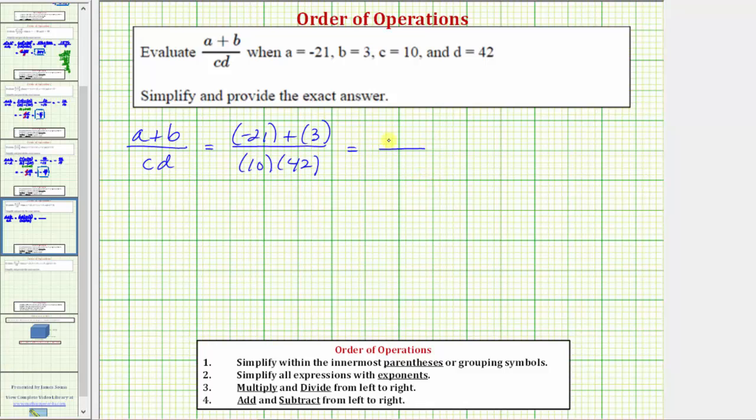So looking at the numerator, we have negative 21 plus three, which equals negative 18. In the denominator, we have 10 times 42, which equals 420.